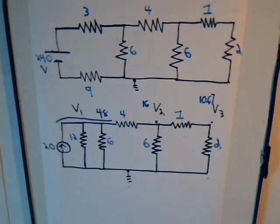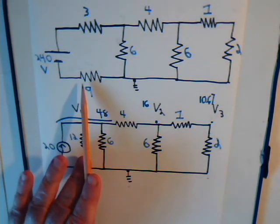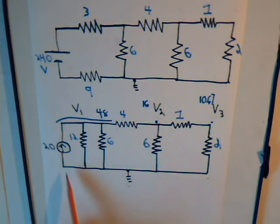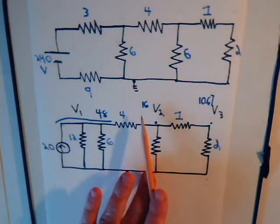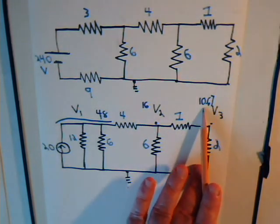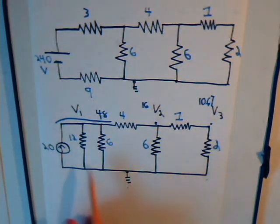In the last video, we started off looking at this circuit and then used a source conversion to convert it to an equivalent circuit. We had determined the voltages at the three top nodes: 48 volts, 16 volts, and 10.67 volts at each node. Now what we're going to do is go back to the original circuit and determine what the mesh currents are.